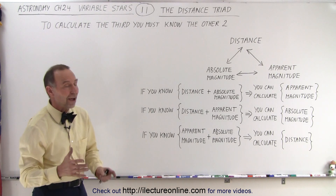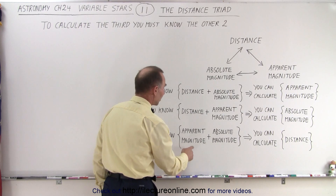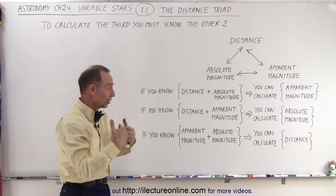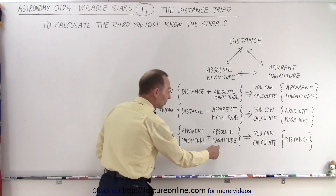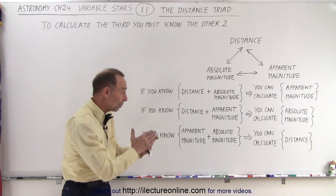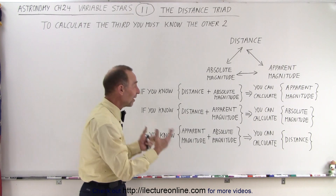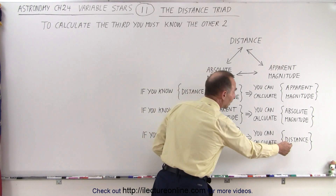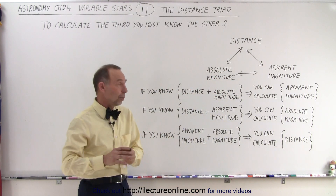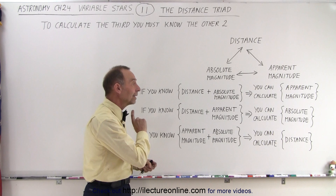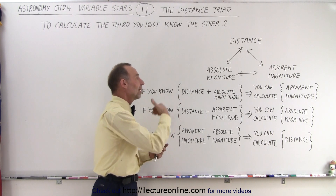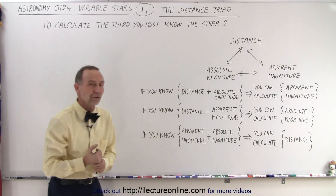Most of the time, we want to figure out the apparent magnitude, which can be found by simply measuring the magnitude as measured from the Earth. Then we need to somehow determine the absolute magnitude — and remember, with Cepheid variables, we found a way to do that. From that, we can calculate the distance. But sometimes we know the distance and the apparent magnitude, and we can then calculate the absolute magnitude. Or sometimes we know the distance and the absolute magnitude, which allows us to calculate the apparent magnitude.